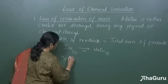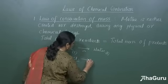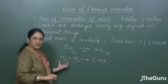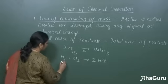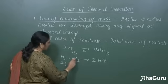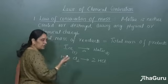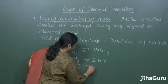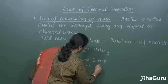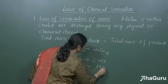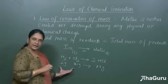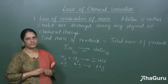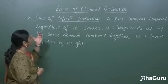Another example: let me react H₂ plus Cl₂ giving you 2HCl. Let us see this with respect to grams. Hydrogen mass is 2 grams, and chlorine — 2 chlorine, each chlorine is 35.5 — so this will be 71 grams. If I add these, this will be 73 grams. So you can see the mass of reactants is equal to the mass of the product.